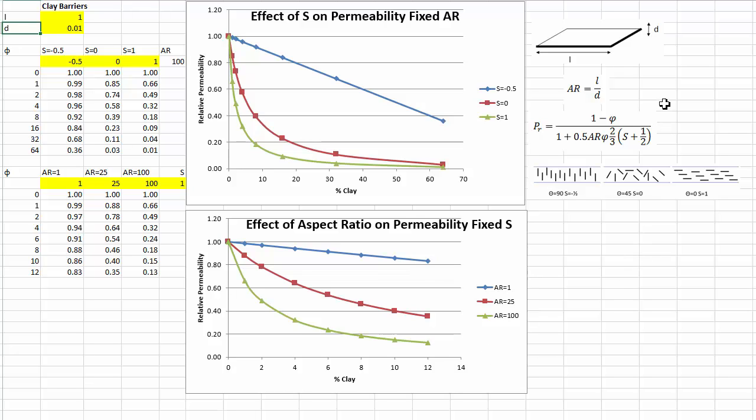I have to define two things. The first is the aspect ratio which is width over thickness, L over d. Obviously a good clay particle has a very large width and a very thin thickness. And this order parameter s which varies from minus a half when they're all aligned vertically through zero when they're aligned randomly and one when they're all aligned horizontally, which of course is when you get the best barrier properties.